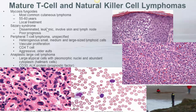Peripheral T-cell lymphoma, unspecified, is a peripheral T-cell lymphoma characterized by heterogeneous small, medium, and large-sized lymphoid cells, as shown in the image in the middle. It has prominent vascular proliferation, as shown in the image. The cells are derived from CD4 T-cells. This is an aggressive lymphoma among older adults.